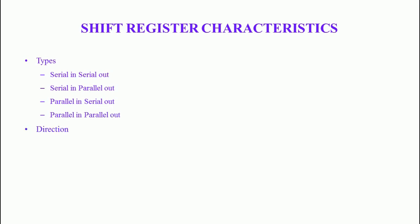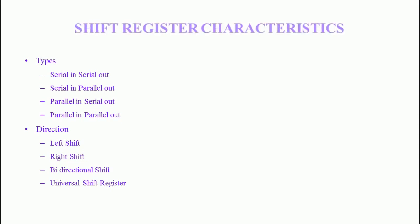Depending on the direction, shift registers can be classified into three types. The first is the unidirectional shift register, in which data can be moved in only one direction — either left shift or right shift. The next is the bidirectional shift register, which can shift data in both left and right directions. The third is the universal shift register, which can shift in both left and right directions and also has parallel load capability.